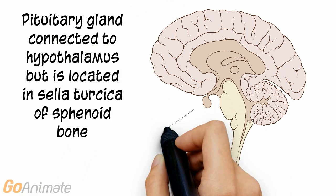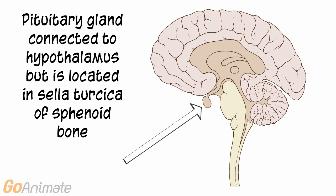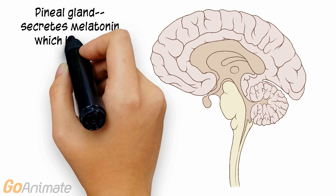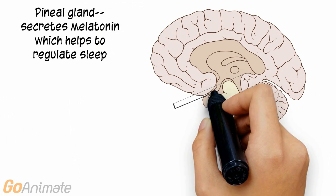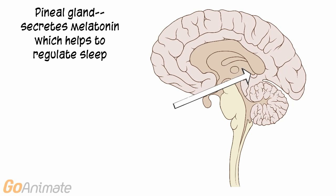The pituitary gland is connected to the hypothalamus via the infundibulum and sits in the sella turcica of the sphenoid bone. The pineal gland is located in the posterior portion of the diencephalon and secretes the hormone melatonin, which helps to regulate sleep.